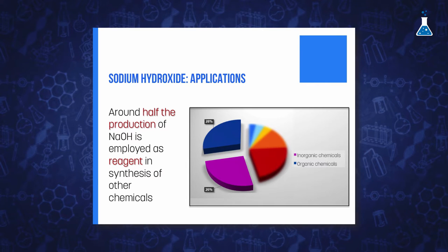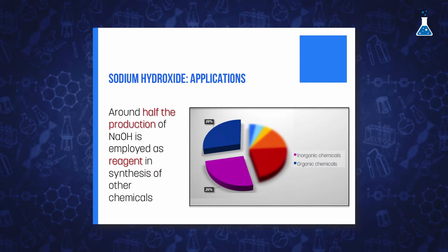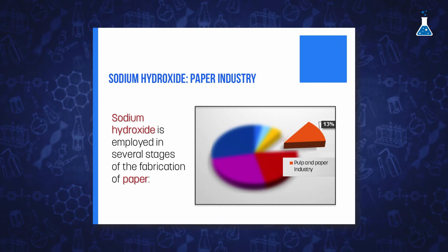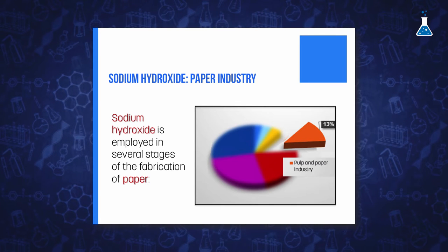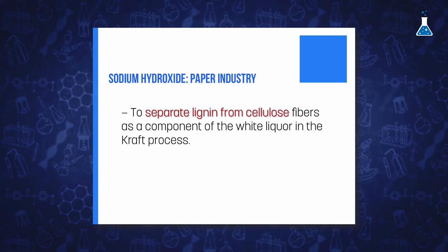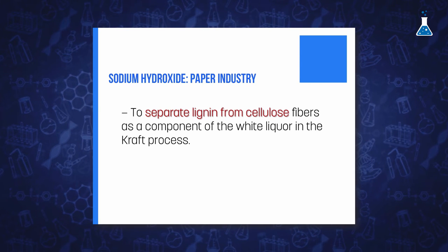Around half the production of sodium hydroxide is mainly employed as a reagent in organic chemical plants and also as a raw material to synthesize other chemicals. It is manufactured as pellets or flakes and is usually employed in synthesis when a cheap alkali is needed. An important use outside the laboratory is in the pulp and paper industry, playing an important role to separate lignin from cellulose fibers as a component of the white liquor along with sodium sulfite in the kraft process.